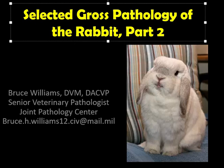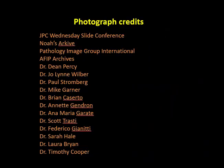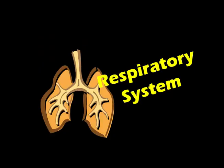Good morning. It's Bruce Williams, and it's time for part two of my series on the selected gross pathology of the rabbit, in which we're going to talk about the respiratory system. Before I start my lecture, I would like to begin as I always do, by thanking my friends and colleagues who over the years have provided me their images, both directly and through online collections, which allow me to put these lectures together. So let's talk about the respiratory system, where some of the key diseases in these species arise.